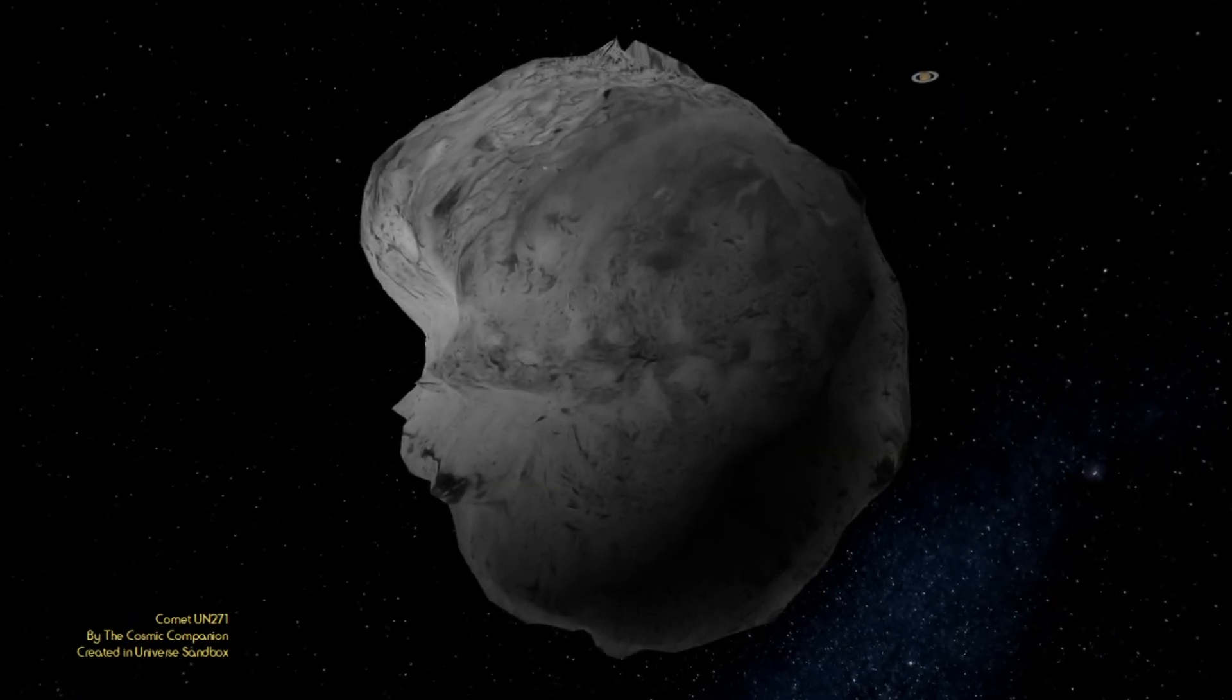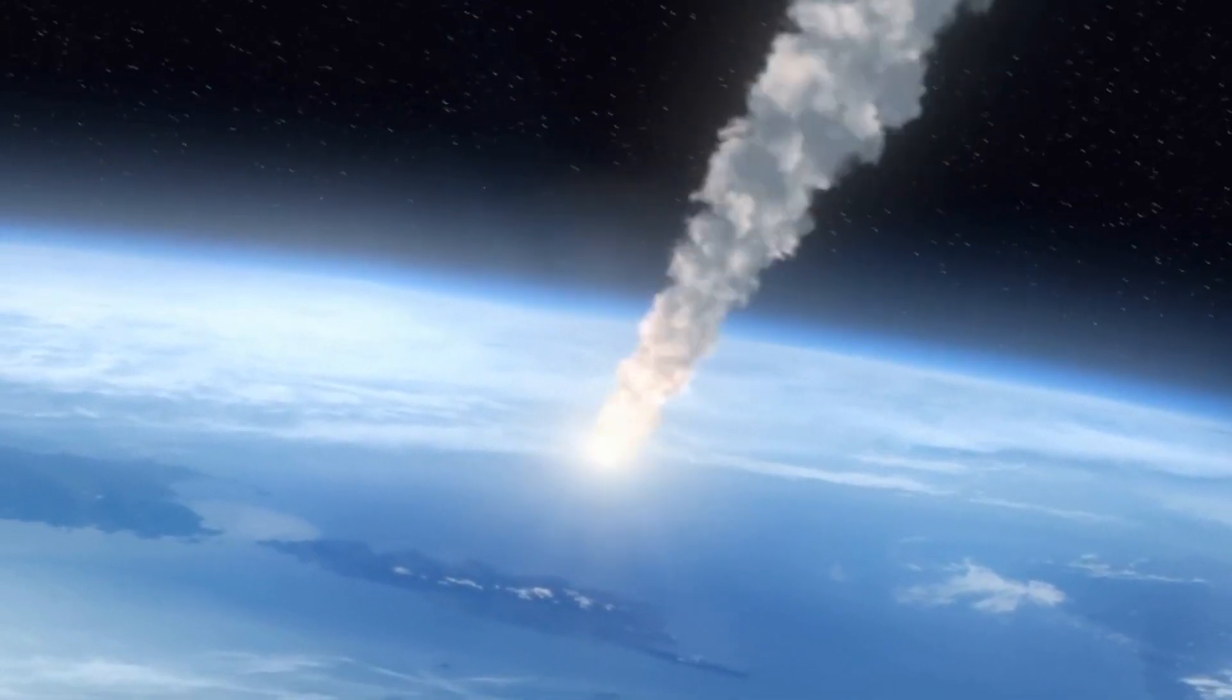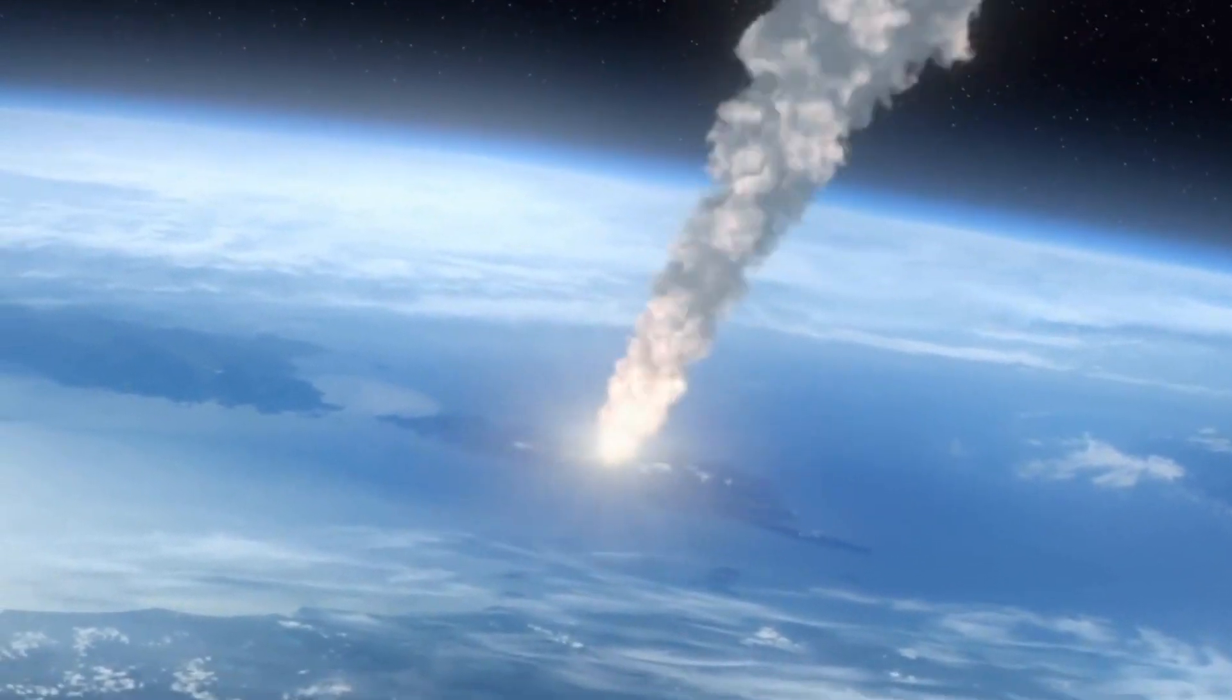From the boundary of the solar system, the massive comet C-2014 UN271, the Bernadinelli-Bernstein, is hurtling towards us at 22,000 miles per hour.